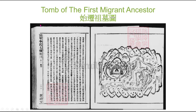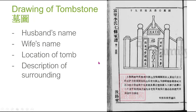I get excited when I see pictures or drawings in Jiapu! Here's a map of the location of the tomb of the first migrant ancestor. Notice the mountains, here is the tomb surrounded by houses, trees, and indication of paddy fields. Here's a close-up drawing of the tombstone — in this drawing you can find the name of the husband and wife, location of the tomb, and description of its surroundings.